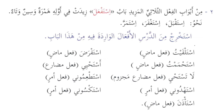And then we have the last exercise. Min abwab al-fi'l al-thulathi al-mazid — babu istaf'ala. From the forms of derived verbs we have bab istaf'ala. Zidat fi awwalihi hamzatun wa sinun wa ta'un — hamza, sin, and ta are added at the beginning. These are huruf al-za'ida — extra letters — that is why we call them fi'l al-thulathi al-mazid. Istaqbala means to welcome or receive. Istaghfara means to ask for forgiveness. Istamara means to continue — it was marara and after assimilation became istamara.